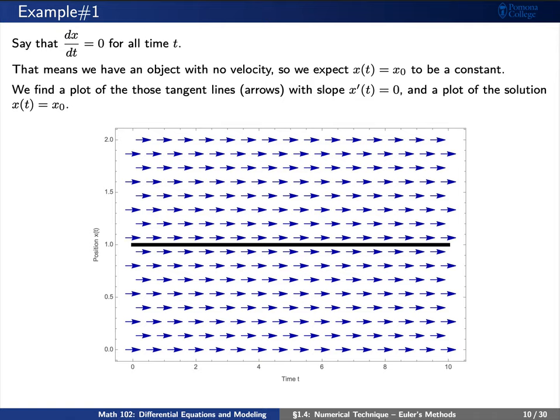As we move along with time, our position remains a constant. This is the black line. More importantly, you can see that in every arrow here, we have a small line that has slope zero. The blue arrows here denote the slope field corresponding to this differential equation.